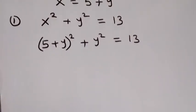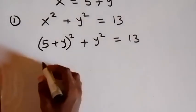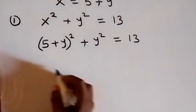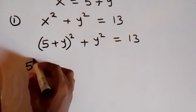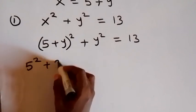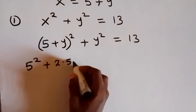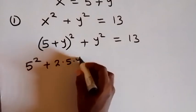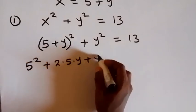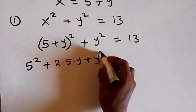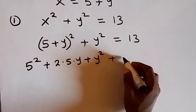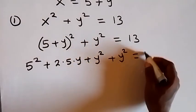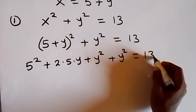Then from here, the expansion gives us 5 squared plus 2 times 5 times y, then plus y squared — that's the expansion — then we also have this y squared, so plus y squared equals to 13.